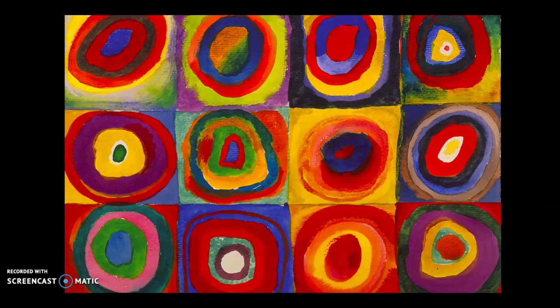When he made this painting, he divided his paper into squares, and then filled them up with concentric circles in different colors. I like how his circles aren't quite perfect, and that he used a variety of colors.